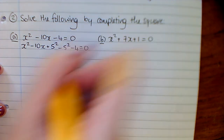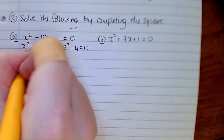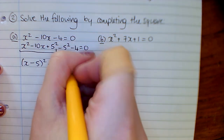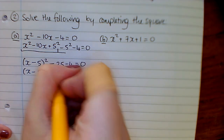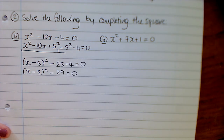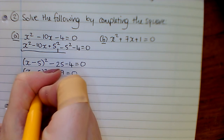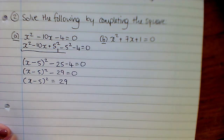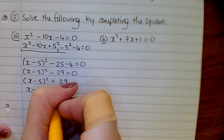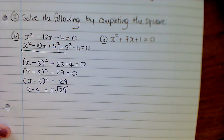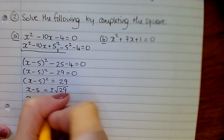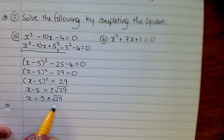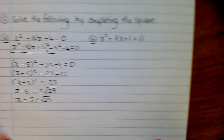First example: x squared minus ten x minus four equals zero. Add on half the coefficient squared and take it away again. This part becomes x minus five, all squared, minus 25 minus four, giving x minus five all squared minus 29 equals zero. Bring the 29 across to the other side, then take the square root of both sides — remember, taking the square root gives a plus or minus answer. Then take the minus five across to make plus five, giving x equals five plus or minus the square root of 29.